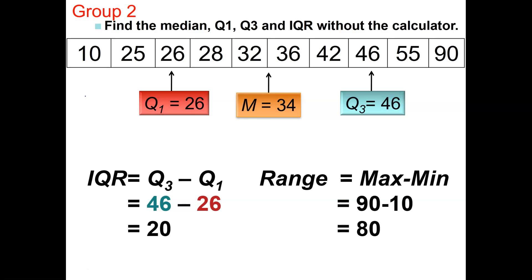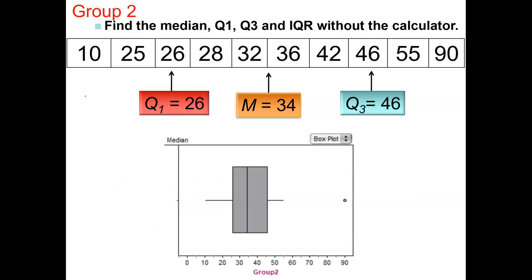We're going to look at the box plot again. In this box plot, this number here is called an outlier. For an extension, you can watch a video on how to mathematically calculate an outlier. Again, 25% of the data is in each box and 25% is in each whisker. We also did this on our graphing calculator, where we typed in the data and did one-variable statistics.